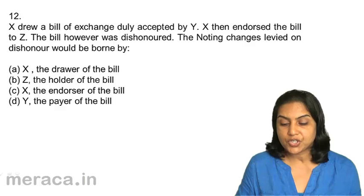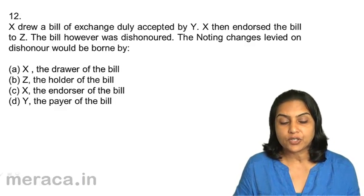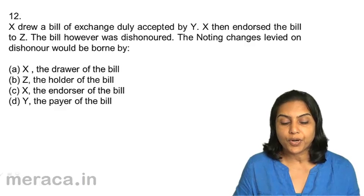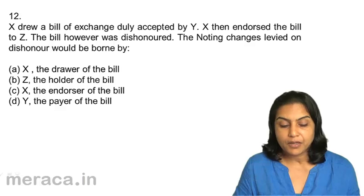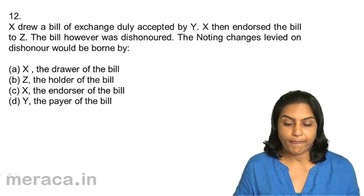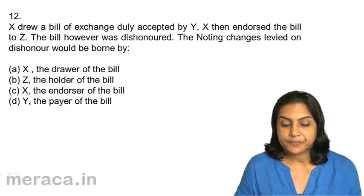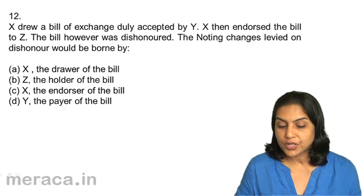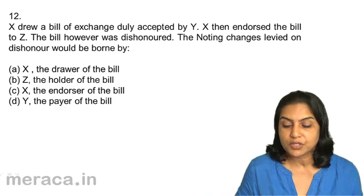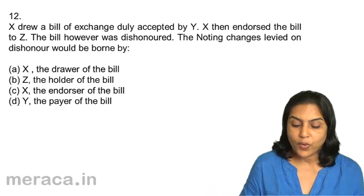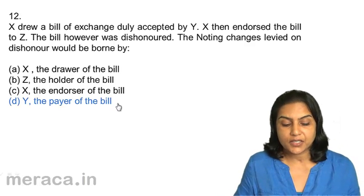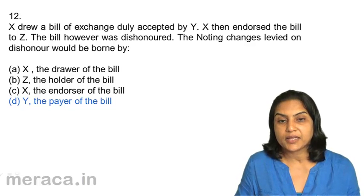Question 12: X drew a bill of exchange duly accepted by Y. X then endorsed the bill to Z. The bill, however, was dishonoured. The noting charges levied on dishonour will be borne by: A. X the drawer, B. Z the holder, C. X the endorser, D. Y the payer. Noting charges have to be borne by the person responsible to pay, which is Y — the payer of the bill. Correct answer: 12D, Y the payer.